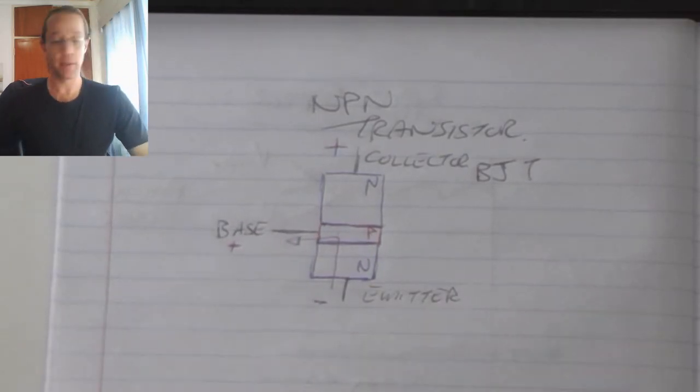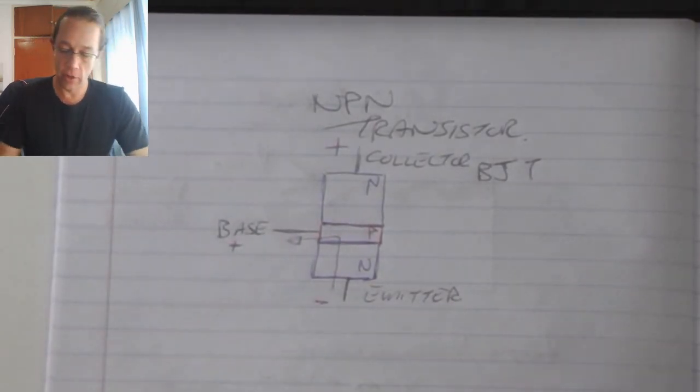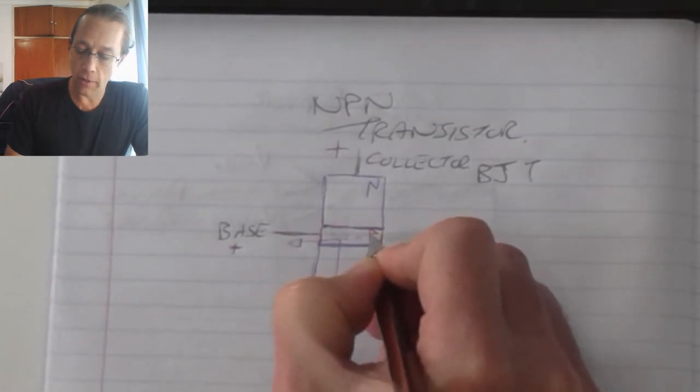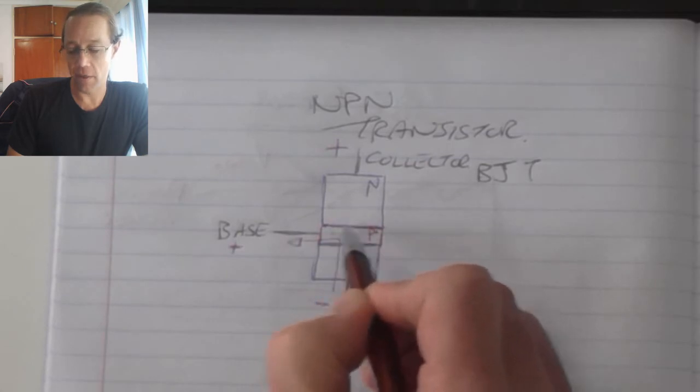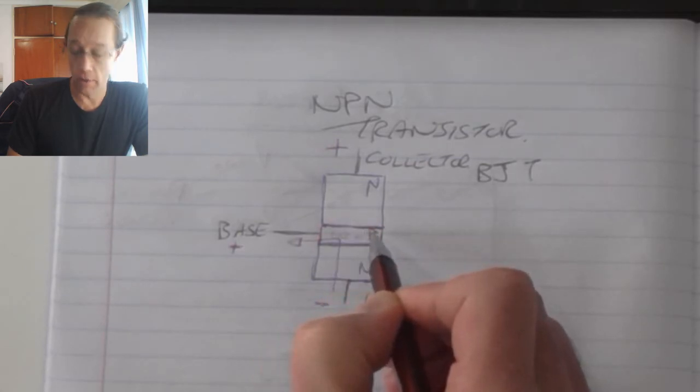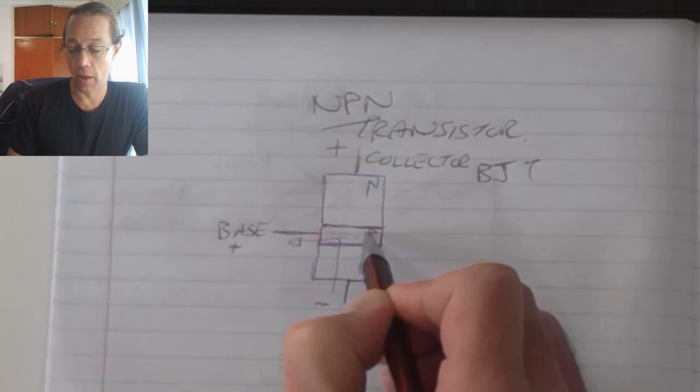Because I have this influx of electrons into this P-type material, that P-type material loses its status as a P-type material because of the large negative charge that it is experiencing.